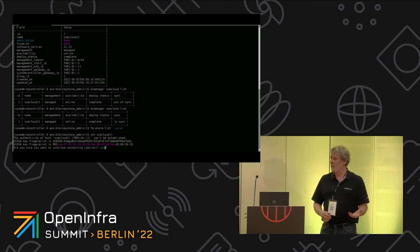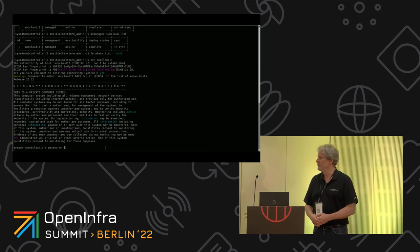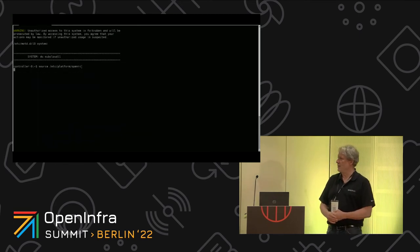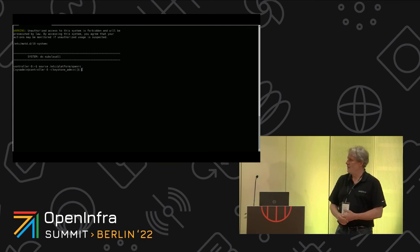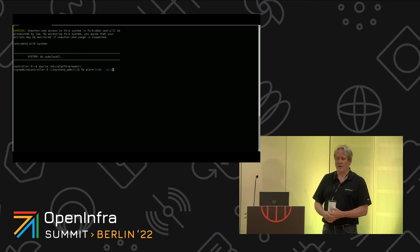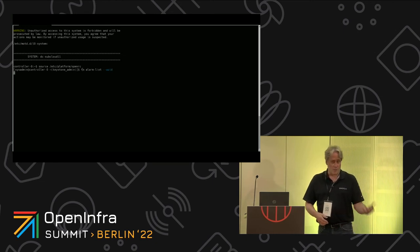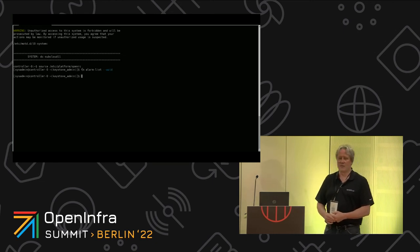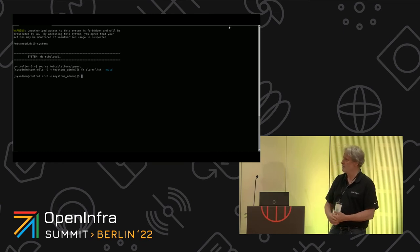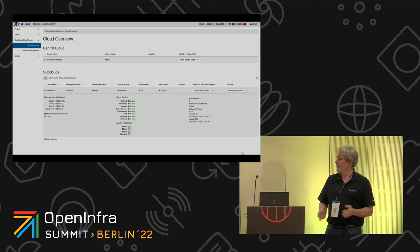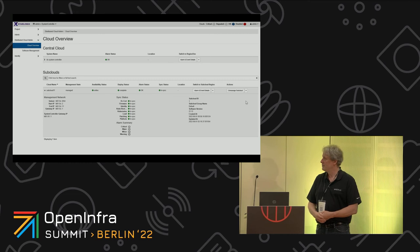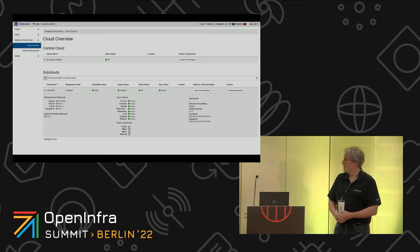Now everything is green in terms of managed online, complete install, and complete sync. We can now SSH — this is SSH-ing into the sub-cloud itself. We're going to run an alarm command to see if there are any open alarms from the sub-cloud's perspective, not from the system controller's perspective. And there are none. If you go back here, everything's green.